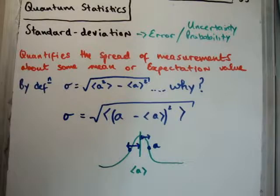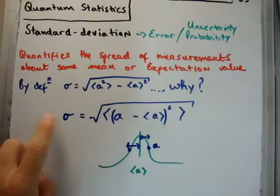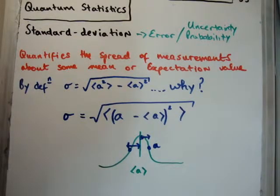Next, you might say to yourself, well, why do we square it and then take the square root? Well, the reason we do this is the result, sigma here, the standard deviation, is often called the root mean squared deviation, or the RMS deviation.